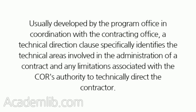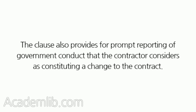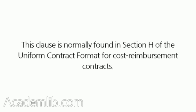a Technical Direction Clause specifically identifies the technical areas involved in the administration of a contract and any limitations associated with the COR's authority to technically direct the contractor. The clause also provides for prompt reporting of government conduct that the contractor considers as constituting a change to the contract. This clause is normally found in Section H of the Uniform Contract Format for Cost Reimbursement Contracts.